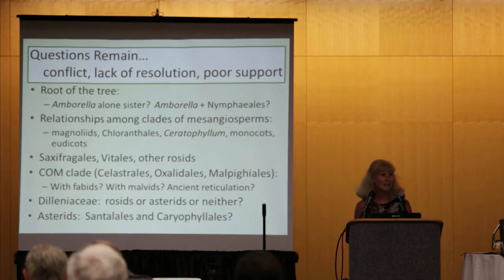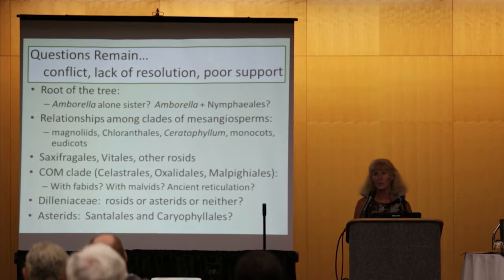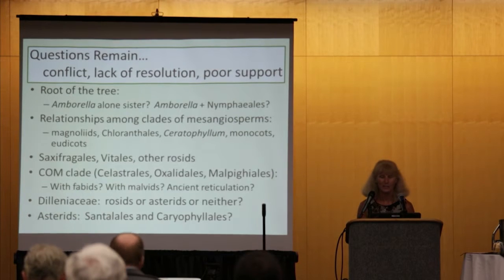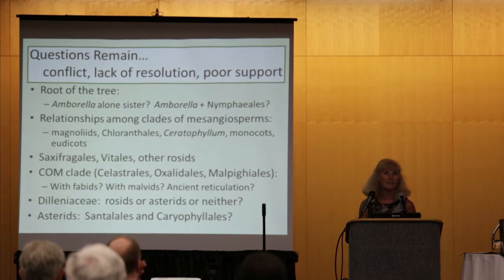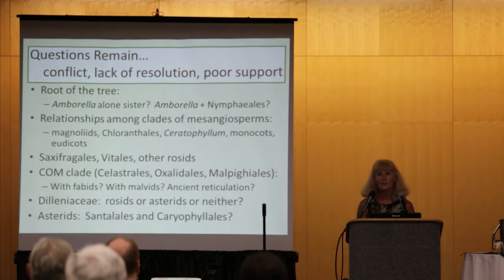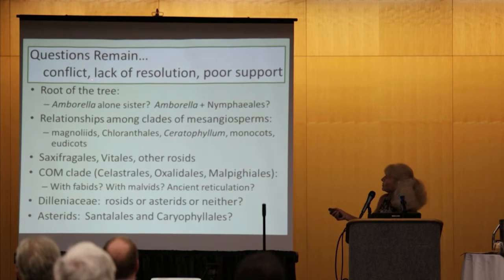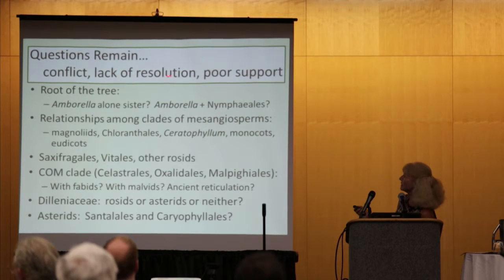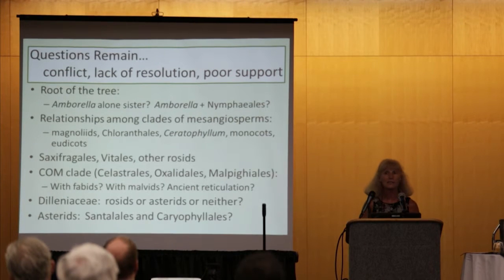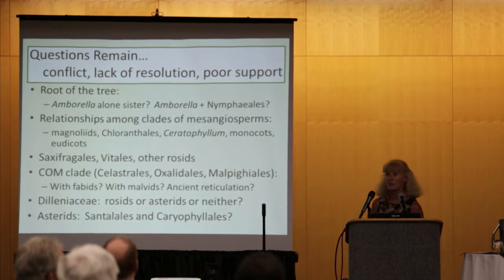One might think that after over 20 years of collaborative phylogenetics of angiosperms, our community would have solved the problem of the relationships among the angiosperms. And in fact, I think we have been very successful in resolving many of the key nodes in angiosperm phylogeny. However, a number of questions still remain due to various sorts of issues: conflict among different trees or different partitions of the data, lack of resolution, and in other places where there is resolution, poor support.